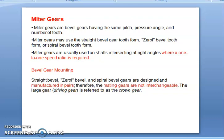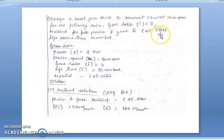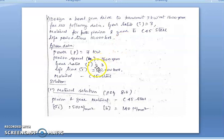With this introduction, we go on to discuss how to solve problems in the design of bevel gears. Let's see the design of a bevel gear drive to transmit 7 kW at 1600 rpm for the following data: gear ratio i = 3, material for both pinion and gear is C45 steel, and life period 10,000 hours.